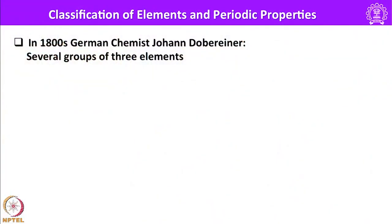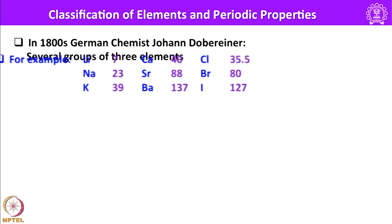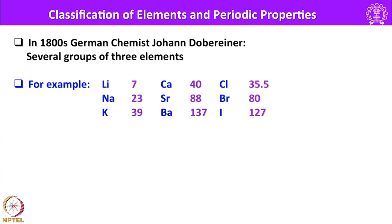In 1800, German chemist Johann Döbereiner tried to come up with a method of organizing all known elements. He made several groups of 3 elements each and called them triads. The interesting property of each triad is that the atomic weight of the middle element is the average of the first and third. For example, sodium's atomic weight of 23 is the average of lithium (7) and potassium (39), giving 46 divided by 2. Similarly, strontium showed 88 midway, and bromine at 80 is the average of chlorine and iodine.